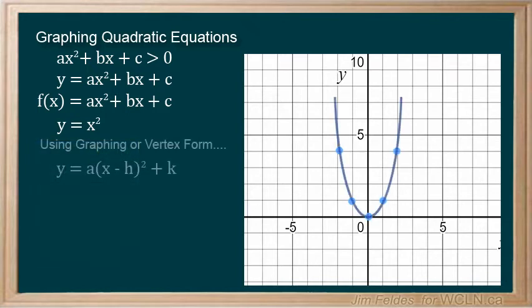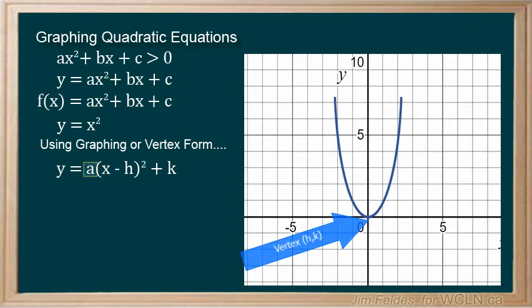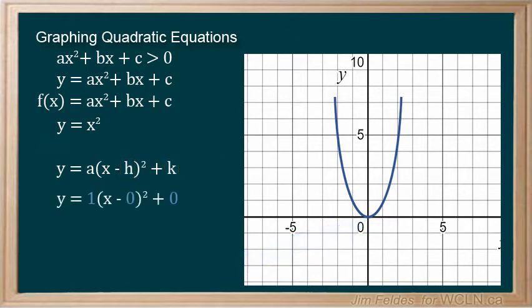We can also graph our quadratic equations by putting them in graphing or vertex form. This quickly gives us our vertex and we can use our understanding of the coefficient a to find other points. We know h gives us the x vertex coordinate value and k gives us the y value. In our model quadratic, both h and k are of course zero.